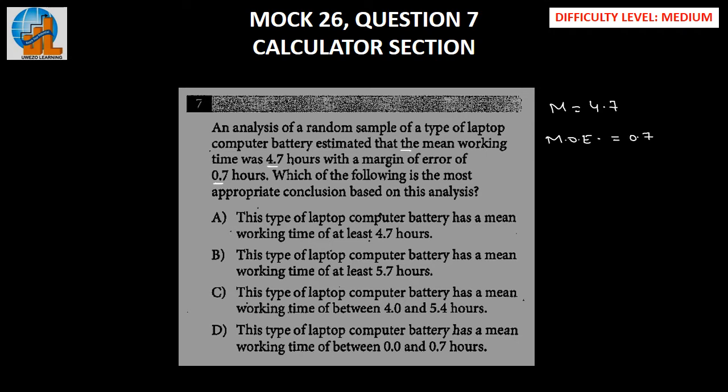Which implies the actual value has to lie between 4.7 minus 0.7 to 4.7 plus 0.7, which implies our mean should be somewhere between 4 less than equal to m and that would be less than equal to 5.4. So this is how we use our margin of error.